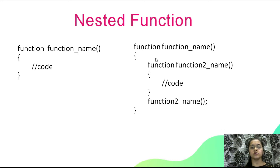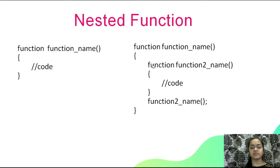You can see there are two functions created. There is function one with a name, and between its two curly braces we have created function number two. The code for function two goes between its own curly braces, but you have to call function two inside function one.